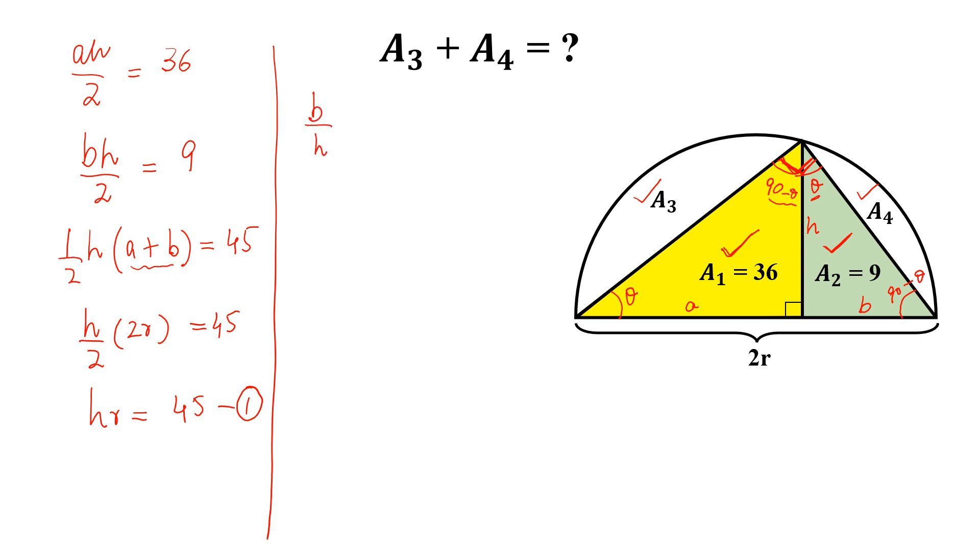And if they are similar then we can write b by h equal to square root of 9 divided by square root of 36. The ratio between their areas is equal to the ratio of the squares of the sides of these two triangles. So simplify this, this is equal to 1 by 2. And from here we get b equal to h by 2.